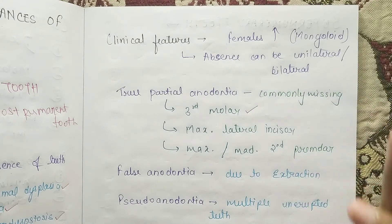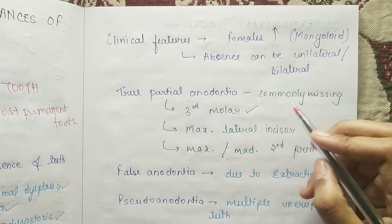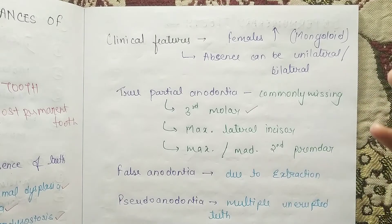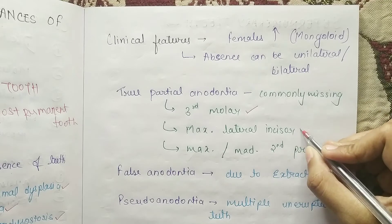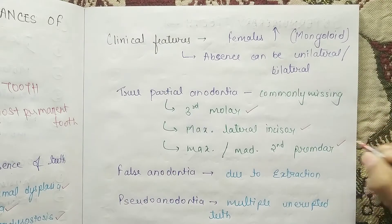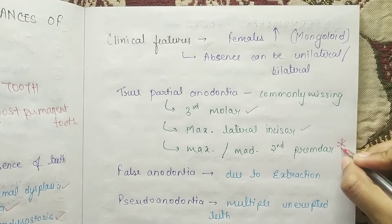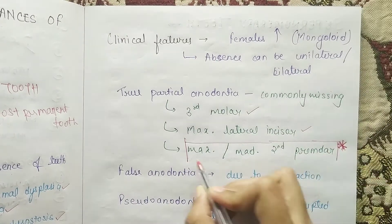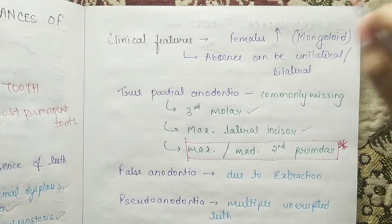Commonly missing teeth are: first, the third molar — it is very common that the third molar is absent. Second is the maxillary lateral incisor. Third is the maxillary and mandibular second premolar. This is very important because the maxillary-mandibular second premolar is asked in the NEET exam.